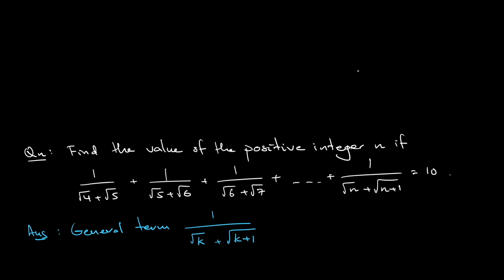If you multiply by the conjugate, multiply the denominator and numerator by square root of k plus 1 minus square root of k. The denominator now becomes k plus 1 minus k, which equals 1. That means it just leaves you with the numerator: square root of k plus 1 minus square root of k.